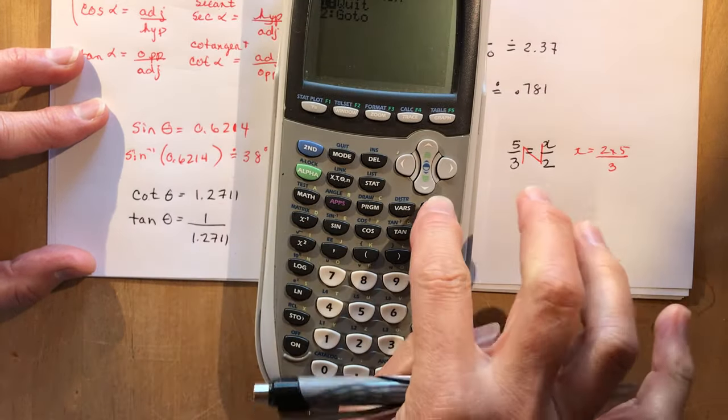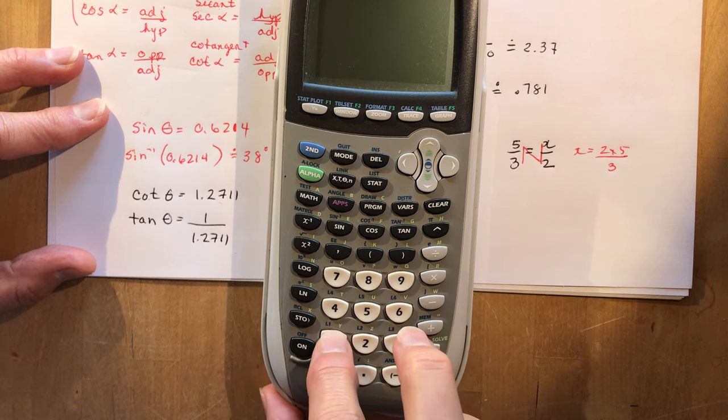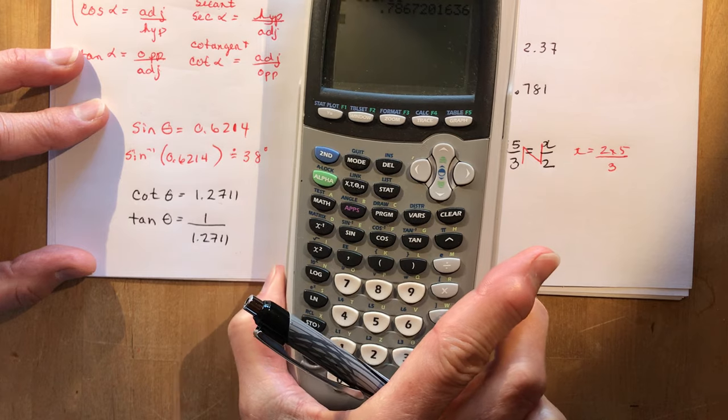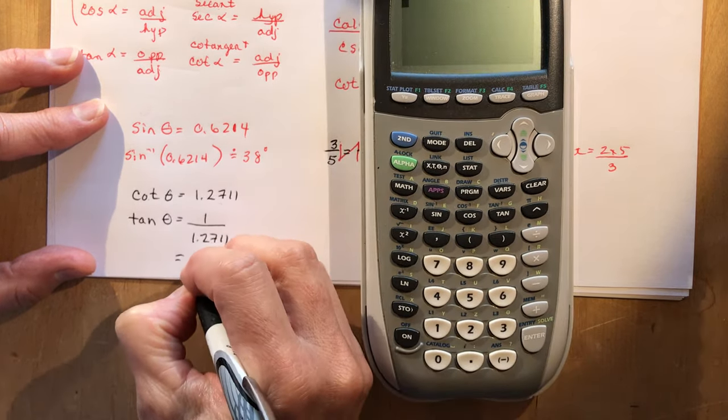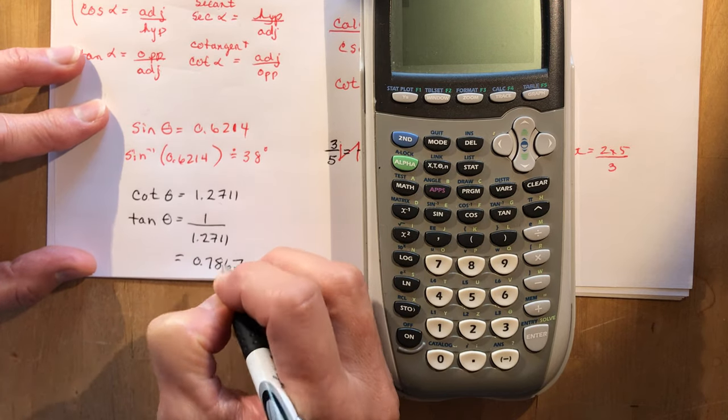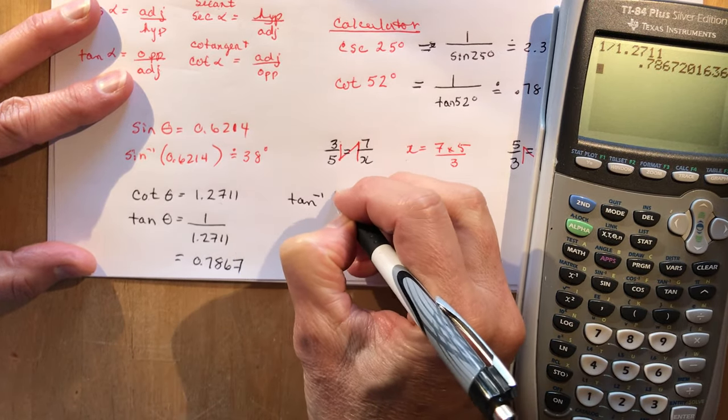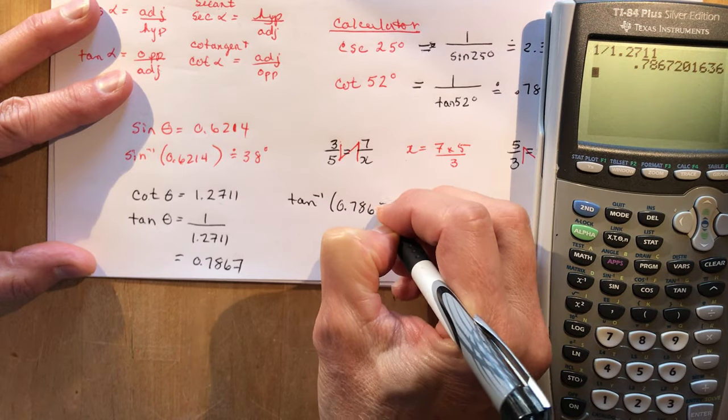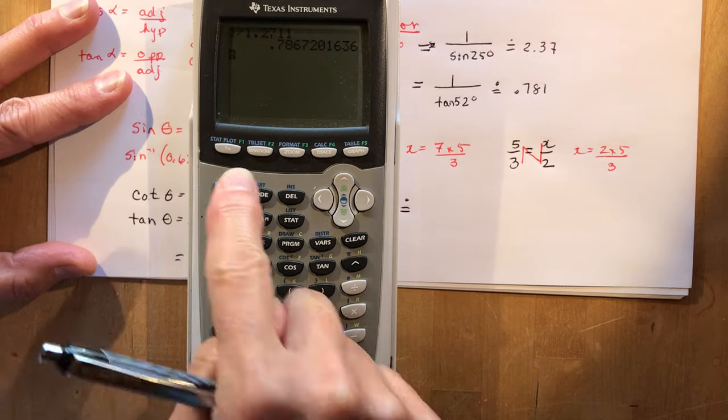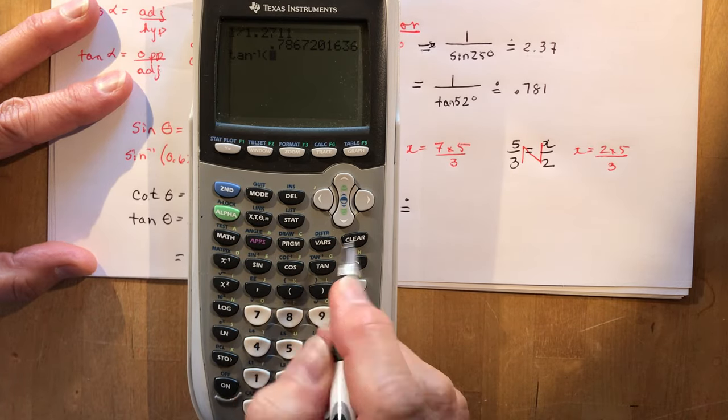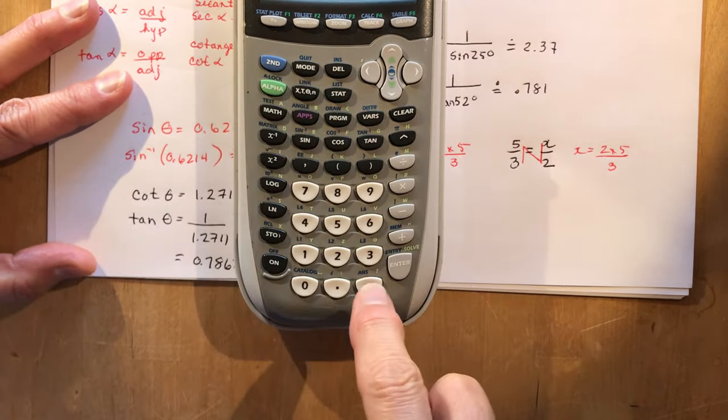So if I get out of this mistake that I did, if I do 1 divided by 1.2711, I have a new ratio. And that would be the tangent of theta. So this is 0.7867. And if I want to know what theta is now, I do tan inverse 0.7867. It's approximately equal to, and all I have to do is second tan, which brings me to this other number here, right? The tan negative 1 of my answer.